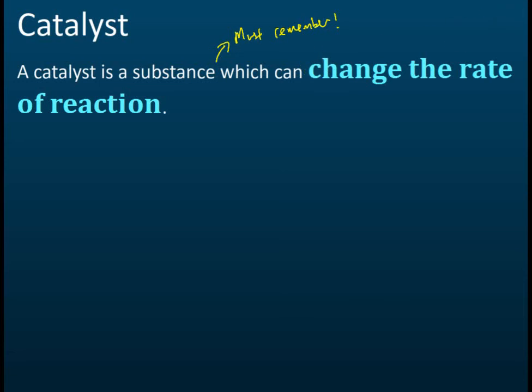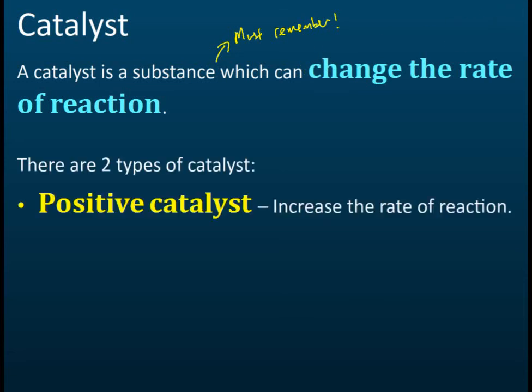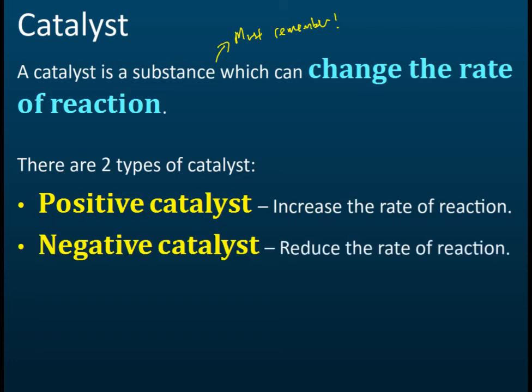There are two types of catalyst. A positive catalyst increases the rate of reactions — it makes the reaction faster. The other type is a negative catalyst, which reduces the rate of reactions or makes the reaction slower.